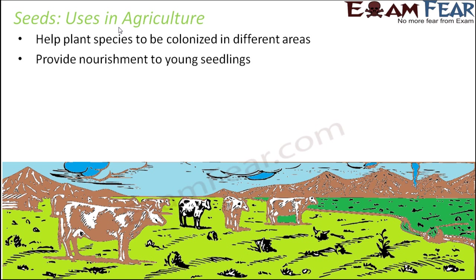Seeds provide nourishment to the young seedlings. The seed itself has the endosperm inside which keeps providing nourishment to the embryo. Even during seed germination, the young seedlings need nourishment, which is provided by the seeds.